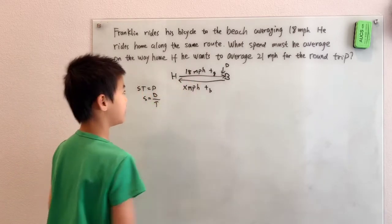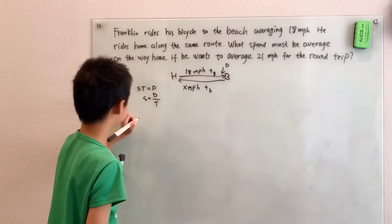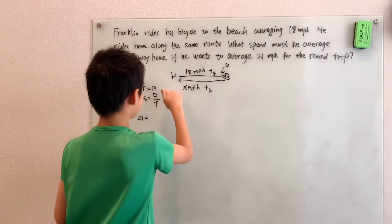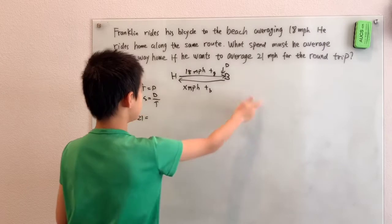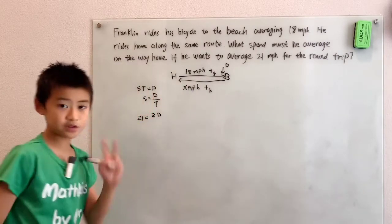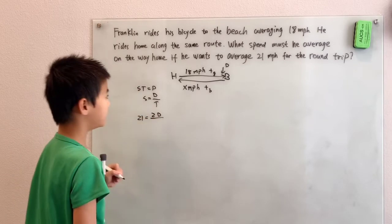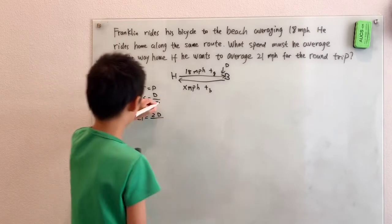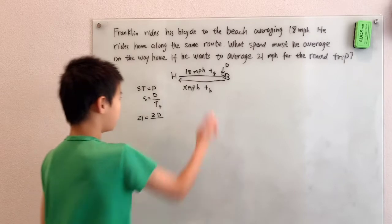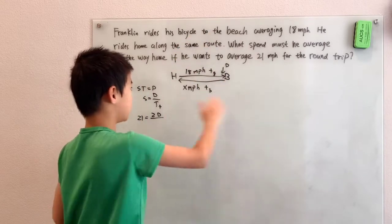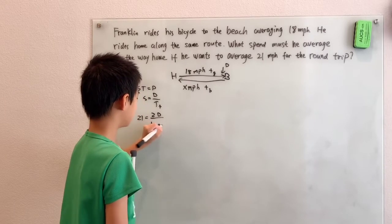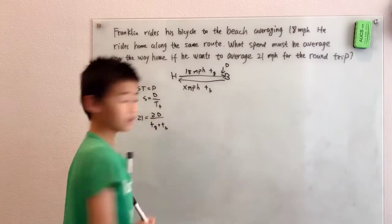We can just plug in things here. Since 21 miles per hour for the average speed that we want equals the distance, home to beach and then beach to home, each distance D. So that means we're going for distance of 2D divided by the total time. I'll write T total, that's time going to the beach plus the time coming back, so TG plus TB.